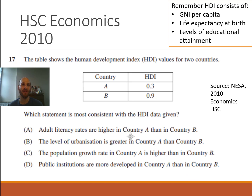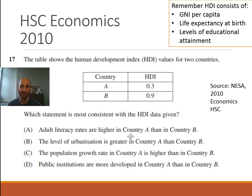Let's have a look at how this can be asked in the HSC. This is a question from 2010. Remember, the HDI consists of GNI per capita (material living standards), life expectancy at birth, and levels of educational attainment. So let's have a look at the question.